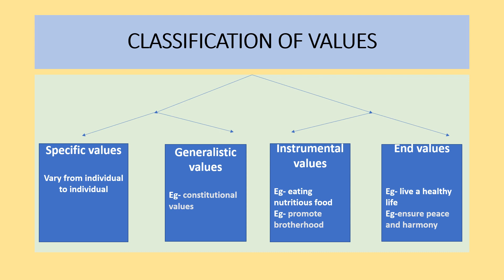The constitution provides legitimacy to these values because they are mentioned in it, and the constitution sets the guidelines for the entire Indian nation - so these become universally generalistic values. The next concept is instrumental values and end values. There are means and ends: to achieve any end objective, certain means need to be fulfilled. For example, eating nutritious food is a means value - why? The end is to live a healthy life. Similarly, promoting brotherhood - why? The end is to ensure peace and harmony.